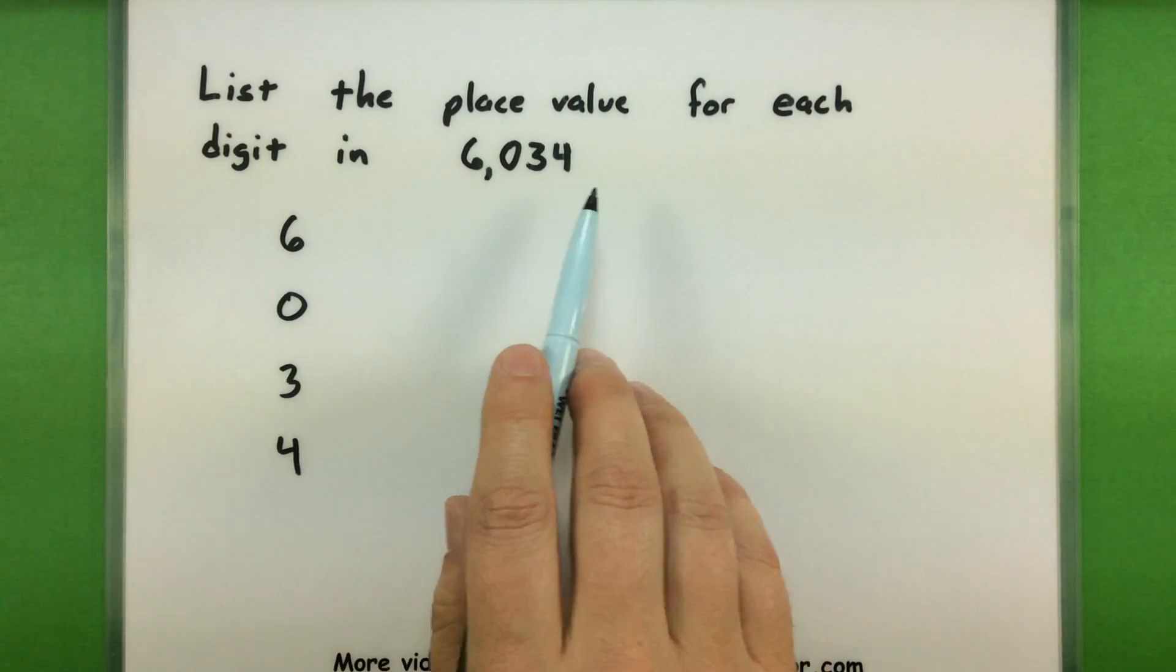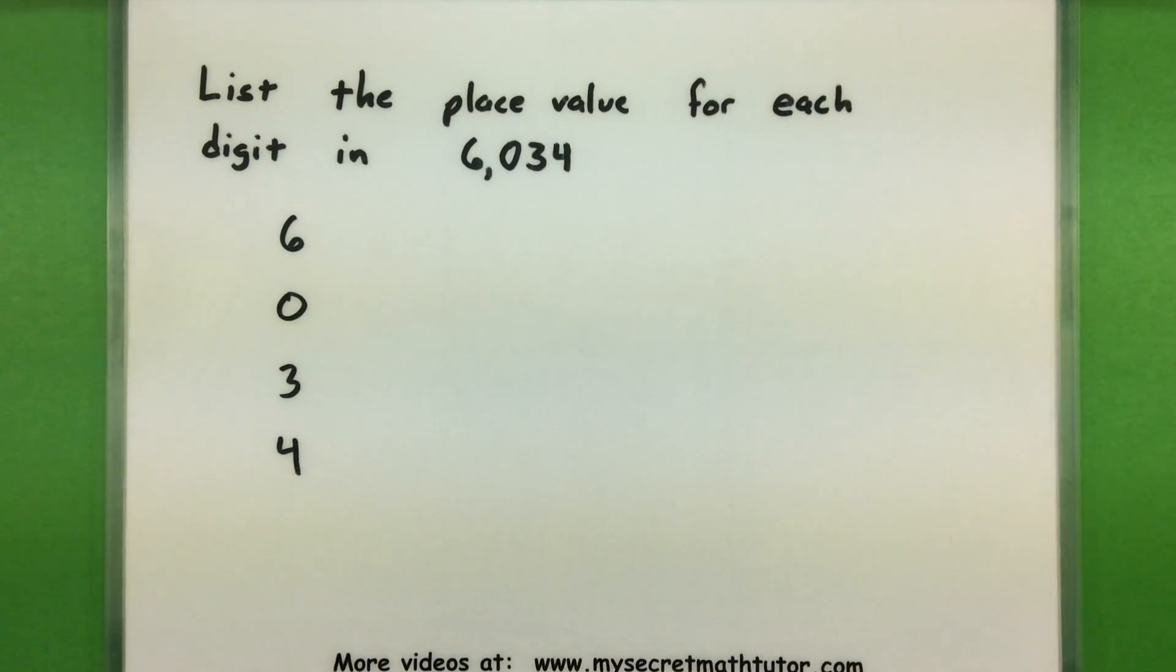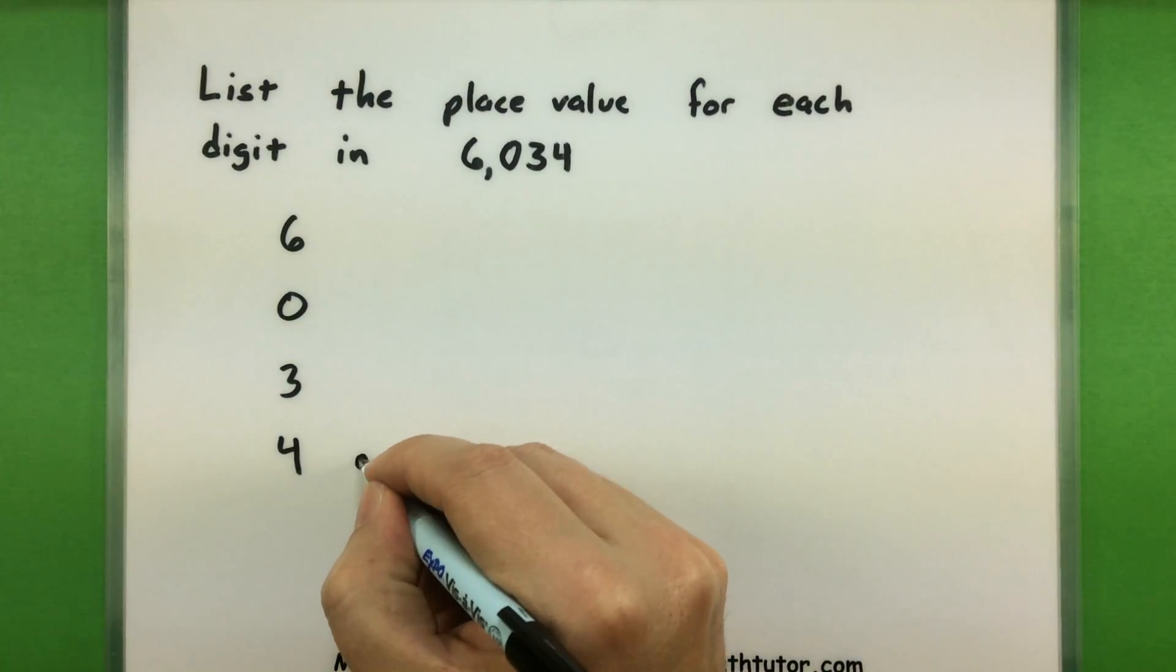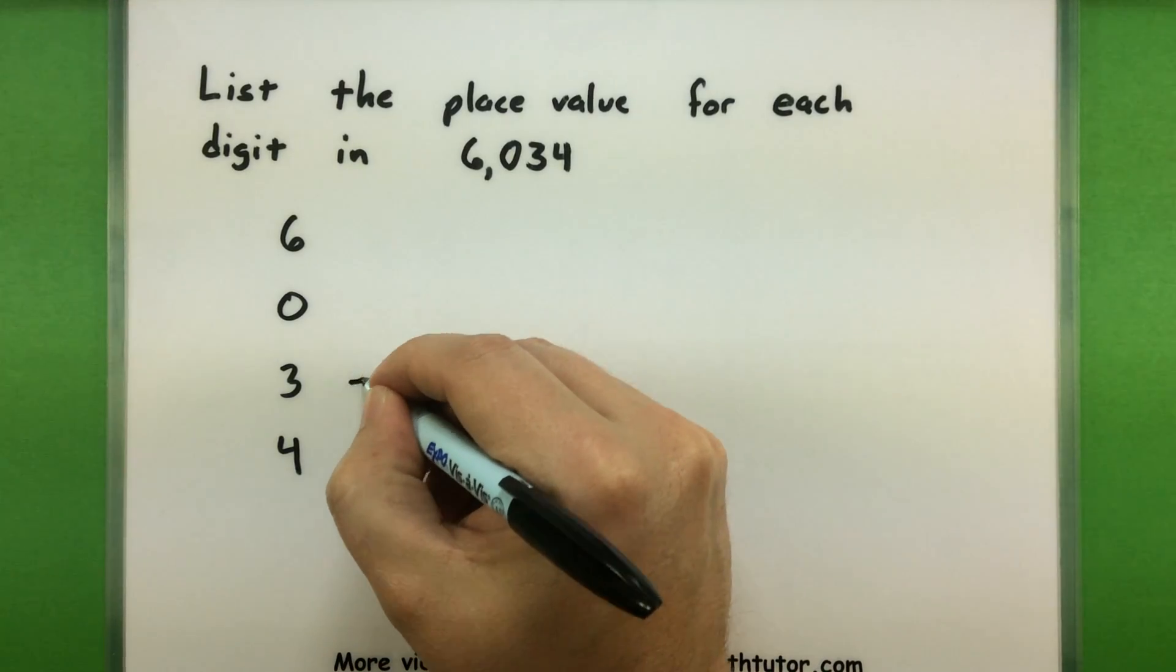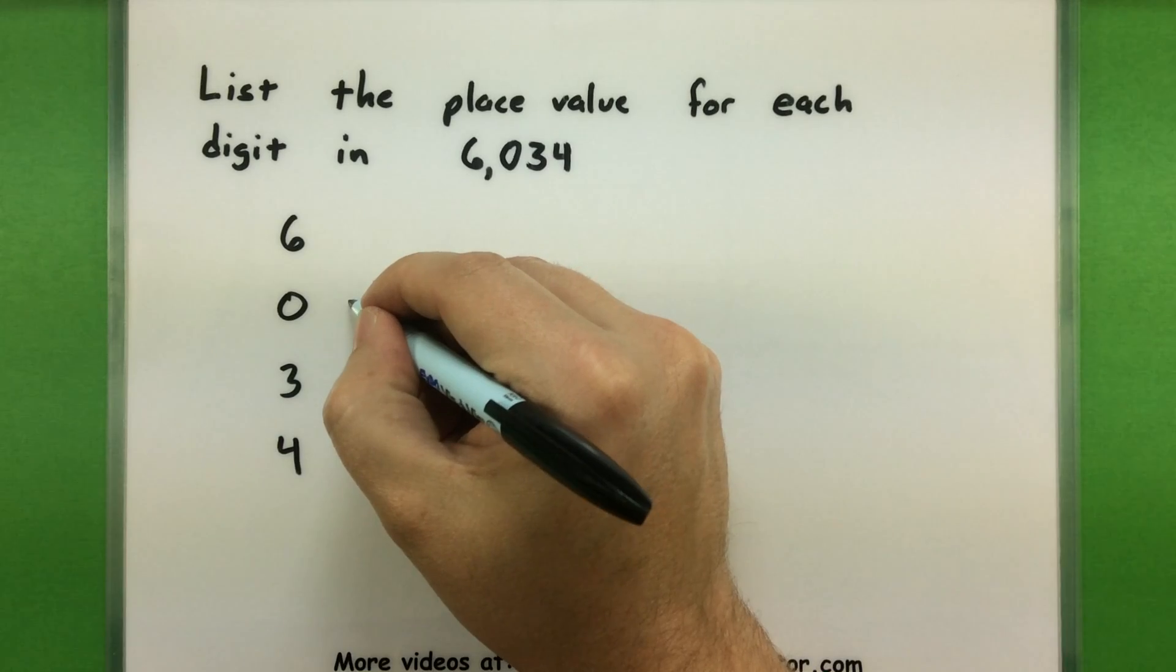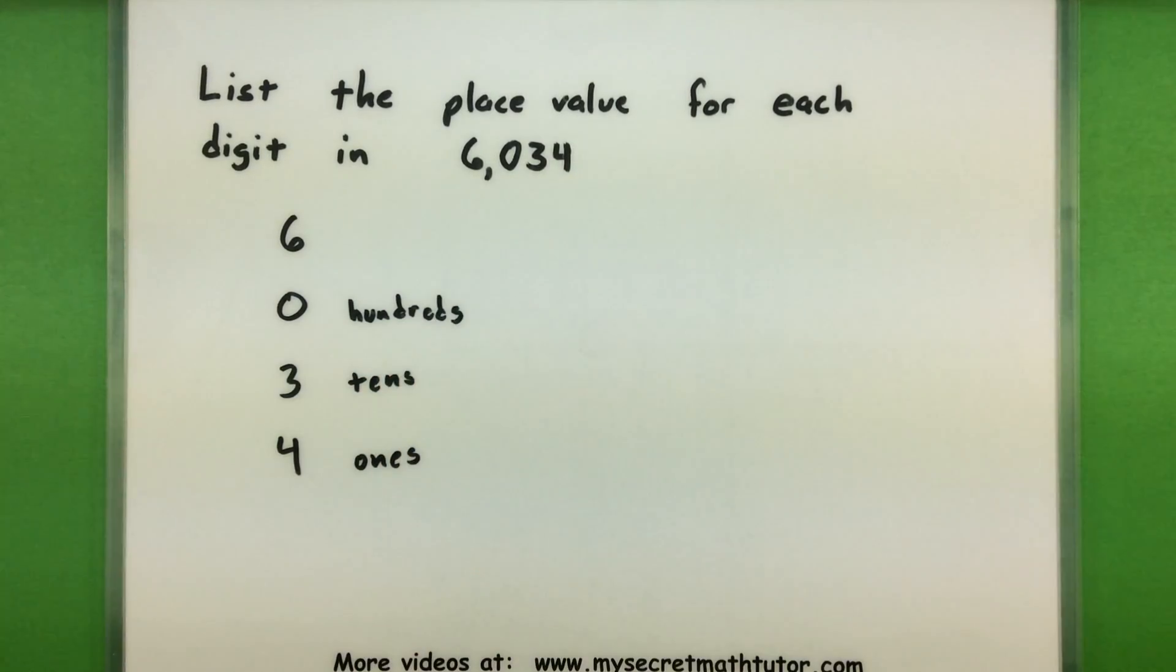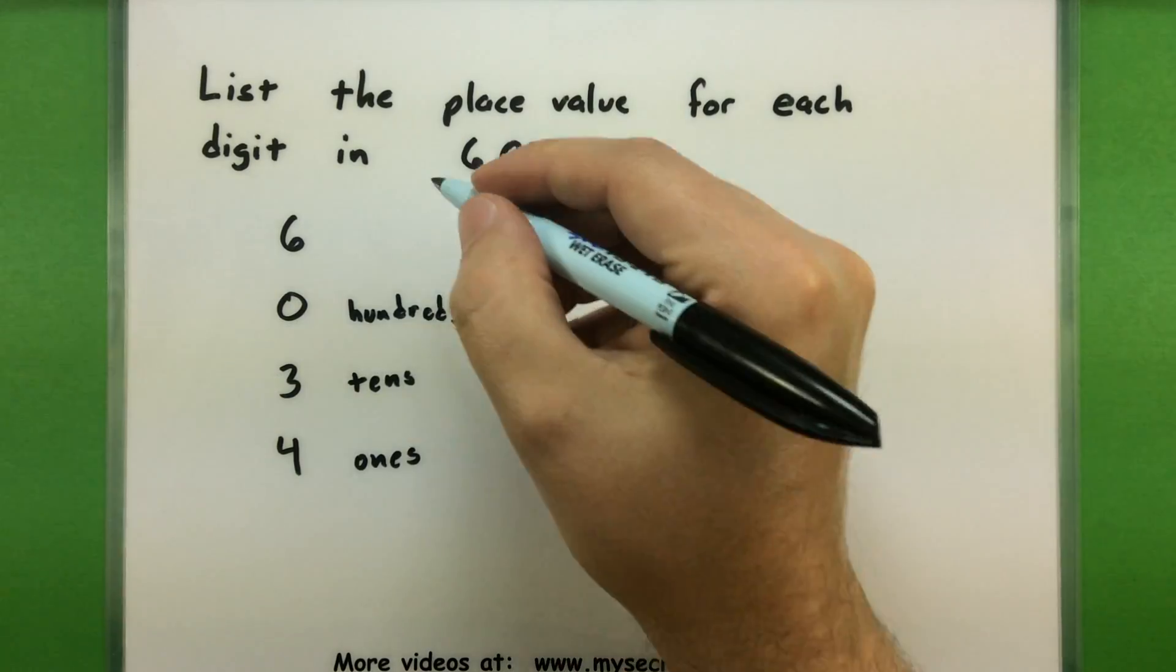So even though we read the numbers from left to right, it's often easier to identify them from right to left. We'll say that the 4 is in the ones place, the 3 is in the tens place, then I have the 0 in the hundreds, and finally we have the 6 in the thousands place.